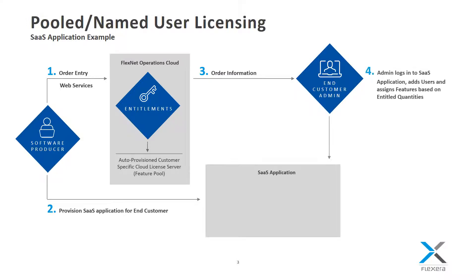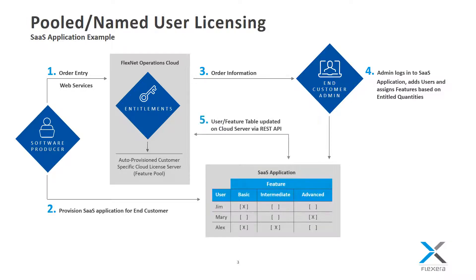The customer administrator logs into the SaaS application, adds the end users, and allocates available features from the cloud server pool to those users. This is accomplished using the REST APIs behind the scenes. This usage feature table is stored on the cloud server and can be read and updated as necessary.